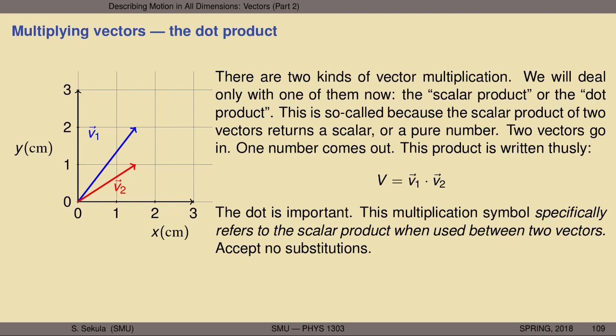Let's consider the nature of the dot product. There are actually two kinds of vector multiplication, but we're only going to deal with one of them right now — the scalar product or dot product. This multiplication of two vectors is so-called because the scalar product of two vectors by definition will return a pure number, a scalar, a directionless number. Two vectors go in, but a number comes out.